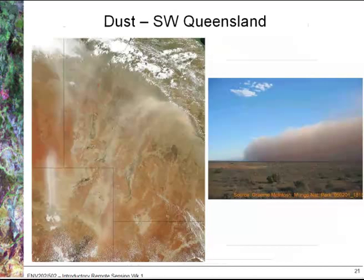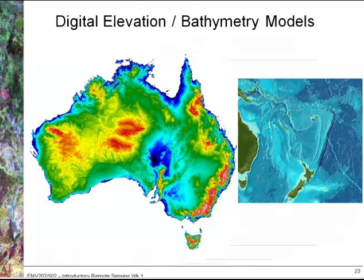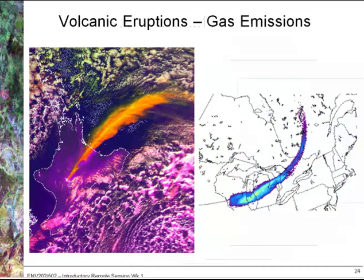This image shows a dust storm across southwest Queensland. We've also got information on vegetation monitoring, which can be used for looking at illegal land clearance, but also there are large projects involving carbon accounting and how that relates to vegetation clearance and regrowth. Digital elevation and bathymetry models are both created from different forms of remote sensing, and this also gives an example of how we can monitor volcanic eruptions — in particular estimating the amount of volcanic gases and ash in the atmosphere, which is particularly important for the aviation industry as they can't fly through volcanic ash.